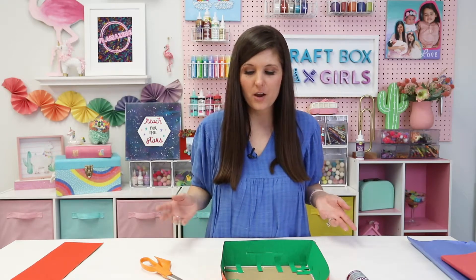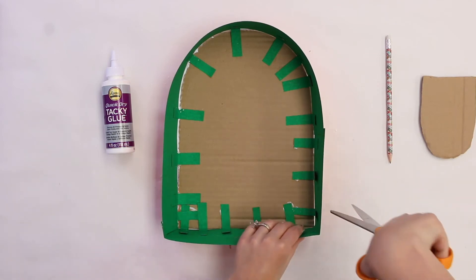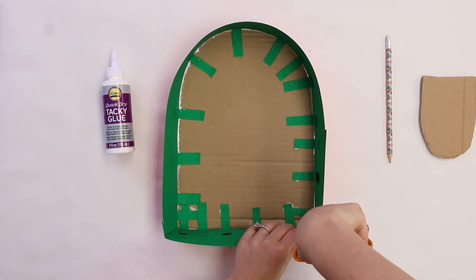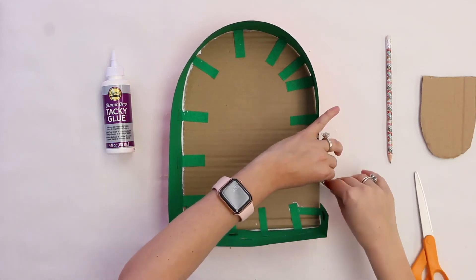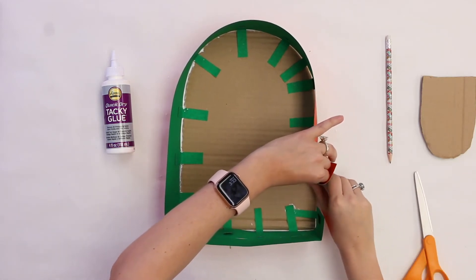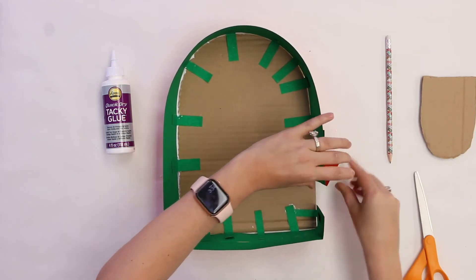So I recommend picking a section, whether it's at the end or the bottom. I'm going to actually just use this small little section right here. I'm going to just bend back my door just a smidge. We'll later on use our clear packing tape to secure it.